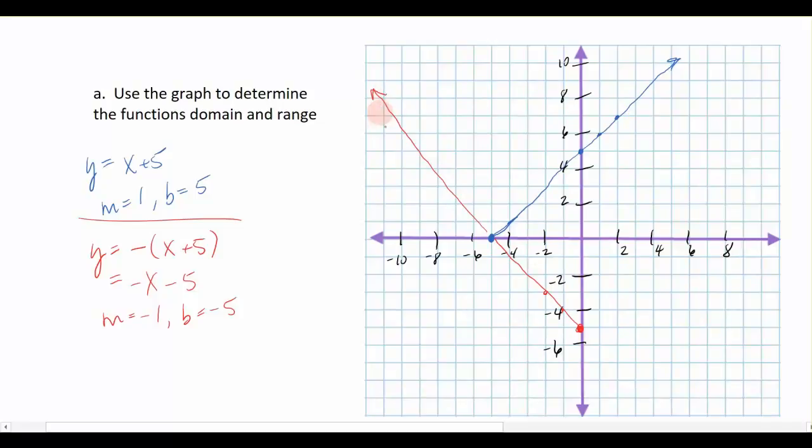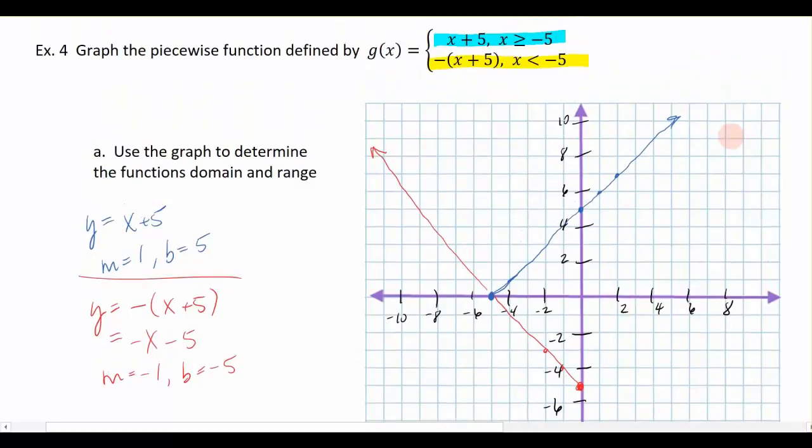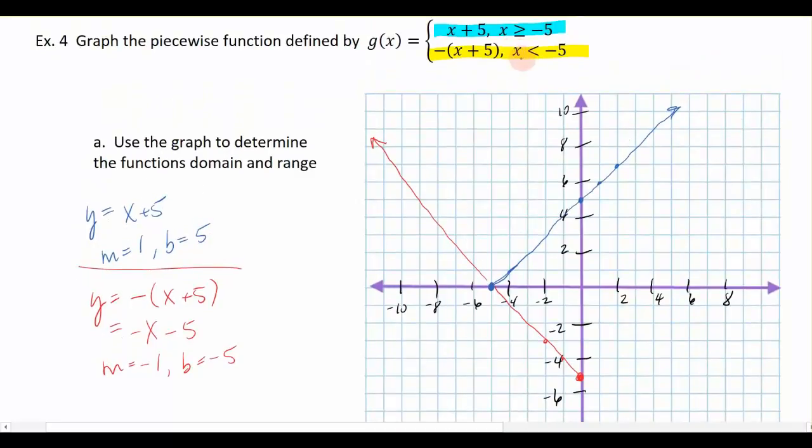Now, we don't want the whole line though, do we? So let's go back up here and look again. I'm only interested in the portion of the line where x values are less than negative 5. So if this is the x value at negative 5, I only want x values that are less than negative 5. So I need to get rid of this bottom portion of the graph.